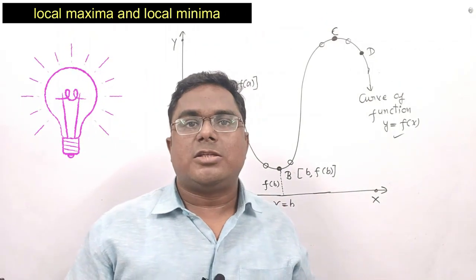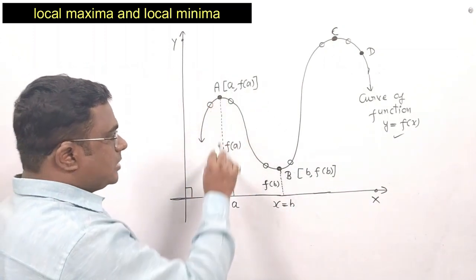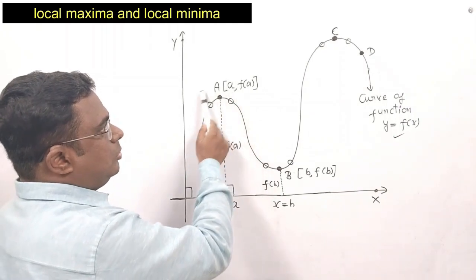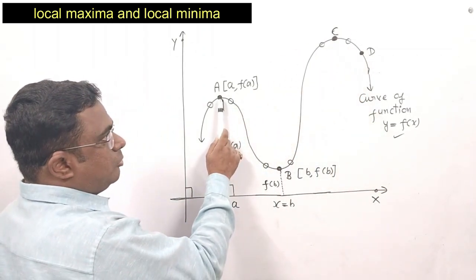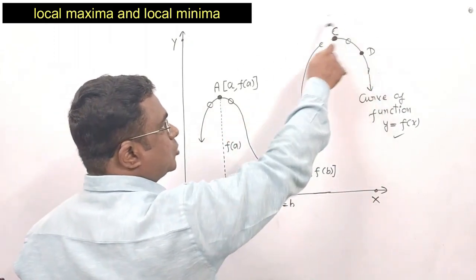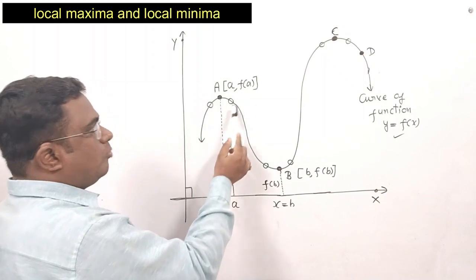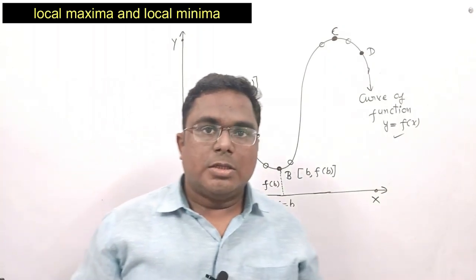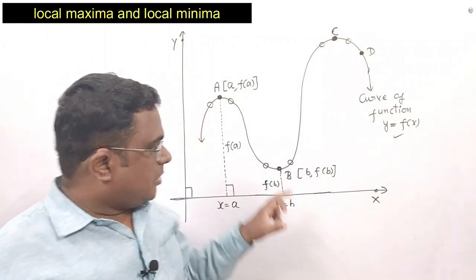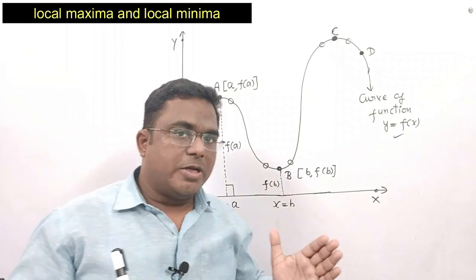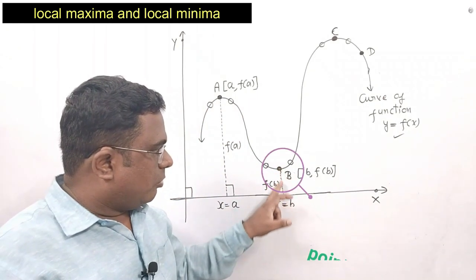You might be a little surprised as to why I used the word 'local' along with maxima. This is because we have declared a as the highest point on the basis of its local area — we have ignored other higher points like c and d. Even though c and d are higher than a, we consider a as the highest point in its local surrounding, which is why we call it the point of local maxima. Point c is also a point of local maxima in its area. Point b, on the other hand, is the lowest point as compared to all nearby points, so point b is called the point of local minima.